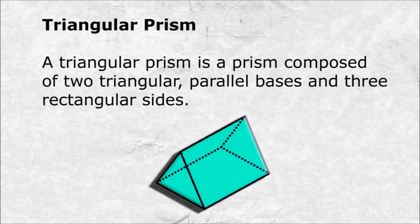Triangular prism. A triangular prism is a prism composed of two triangular parallel bases and three rectangular sides.